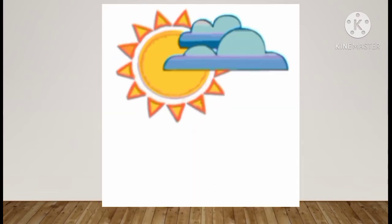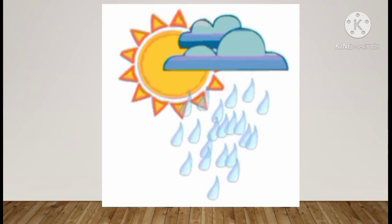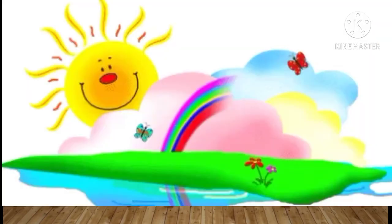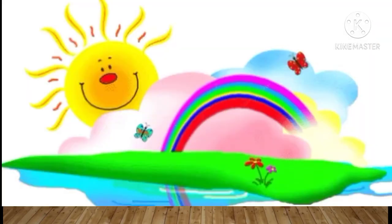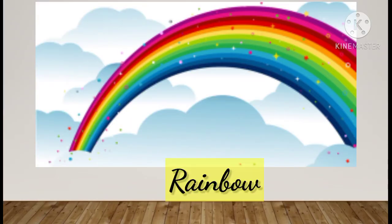Okay, so I will show you: the rainbow comes from sun plus rain — both of them together. Sunshine also plays a role. So what is the reason why it creates a rainbow? And in a rainbow, how many colors are there? Seven colors — right! So let's read about those seven colors. Let's start.